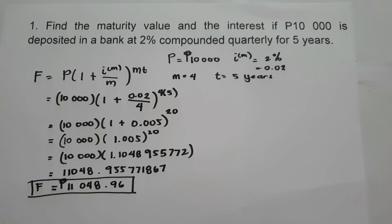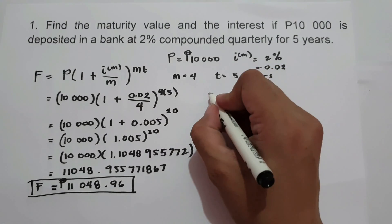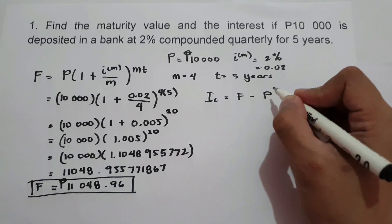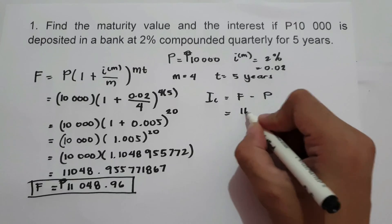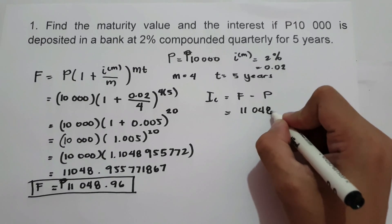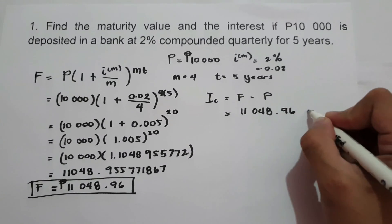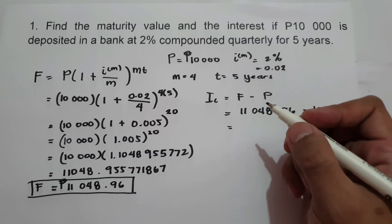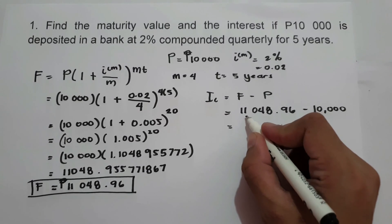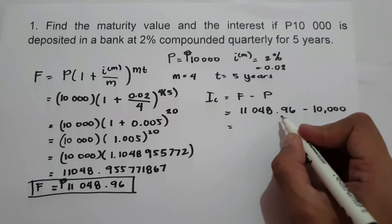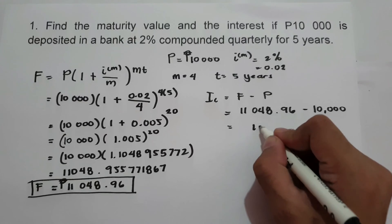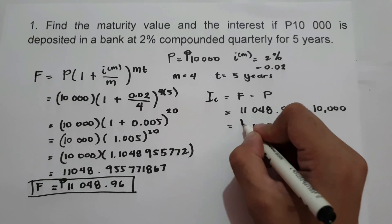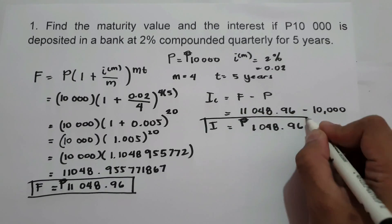To find the interest, we use the formula: interest equals future value minus principal. So 11,048.96 minus 10,000 equals 1,048.96. This is the interest.